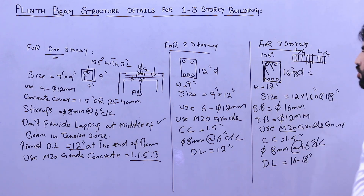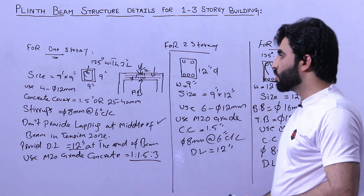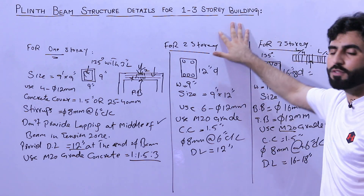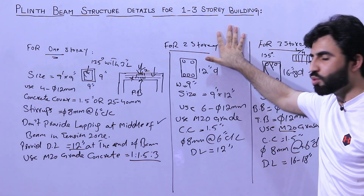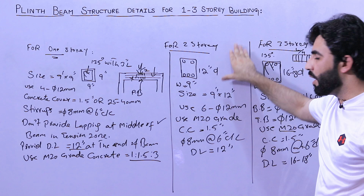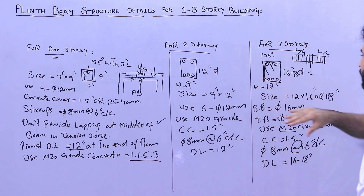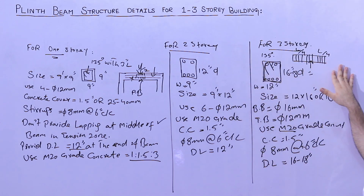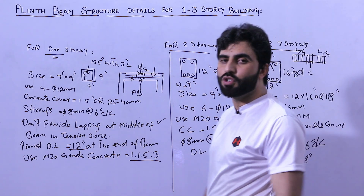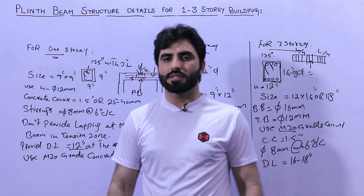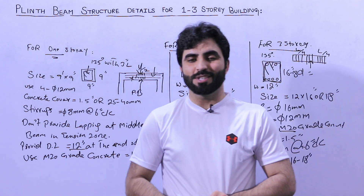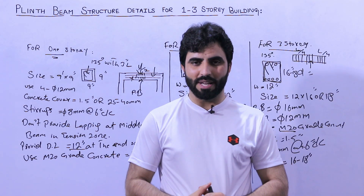Hope this short video helps you understand plinth beam structure details for one to three stories. To summarize: nine by nine inches for one story, nine by twelve inches for two story, and twelve by sixteen or eighteen inches for three story, with different steel reinforcement diameters and other details. Thanks for watching, see you in the next video. Goodbye.